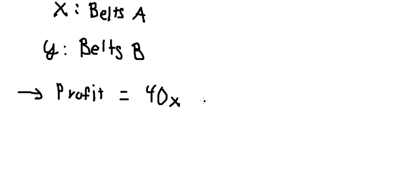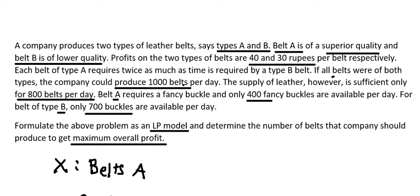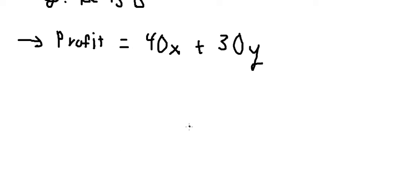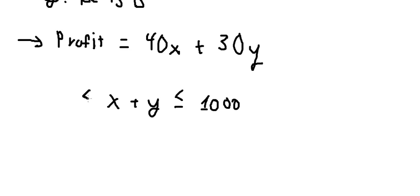The company can produce 1,000 belts per day, so our first constraint is X plus Y is less than or equal to 1,000, and both X and Y must be greater than or equal to zero.